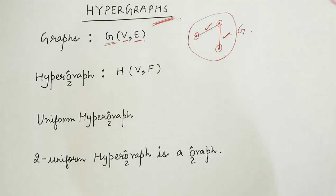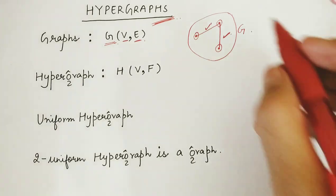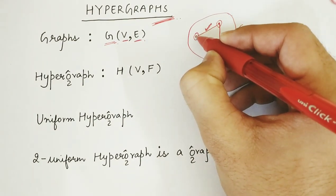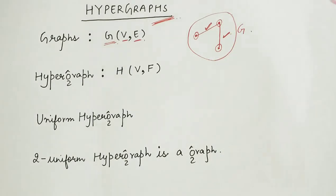Now, the set of edges is a relation between a pair of vertices. For example, this edge is between this vertex and this vertex. Now, this edge can either be directed or undirected.